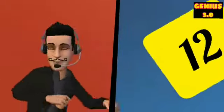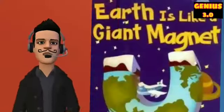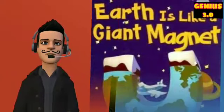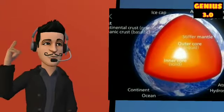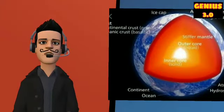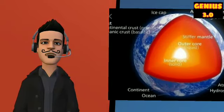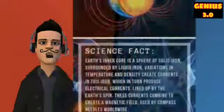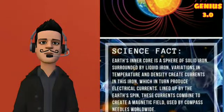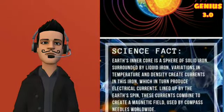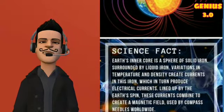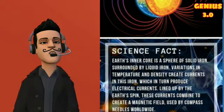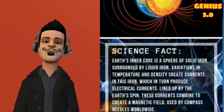The 12th amazing fact is the Earth is a giant magnet. Earth's inner core is a sphere of solid iron surrounded by liquid iron. Variations in temperature and density create currents in this iron, which in turn produce electrical currents. These currents combine to create a magnetic field used by compass needles worldwide.